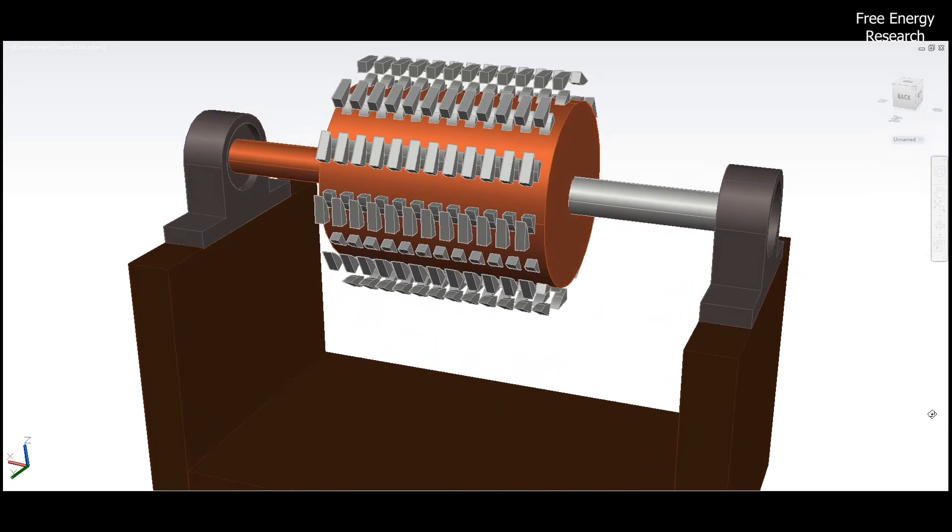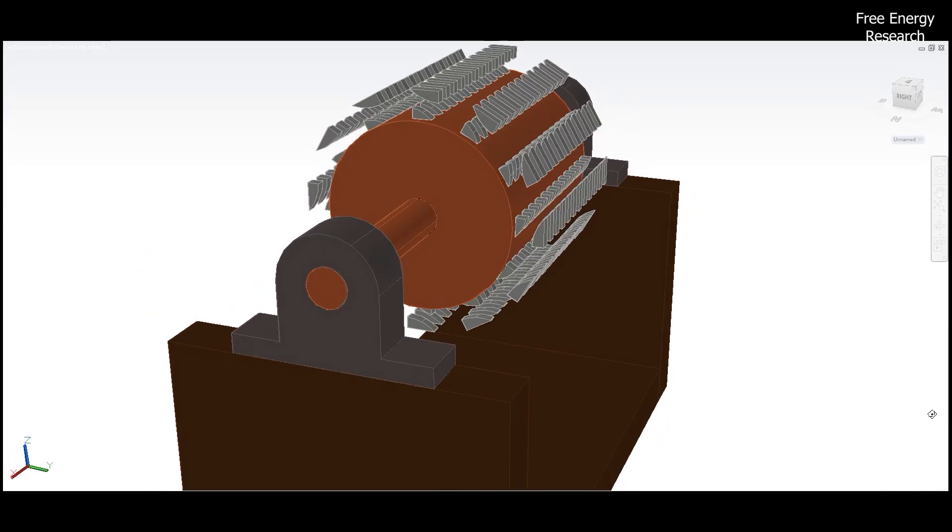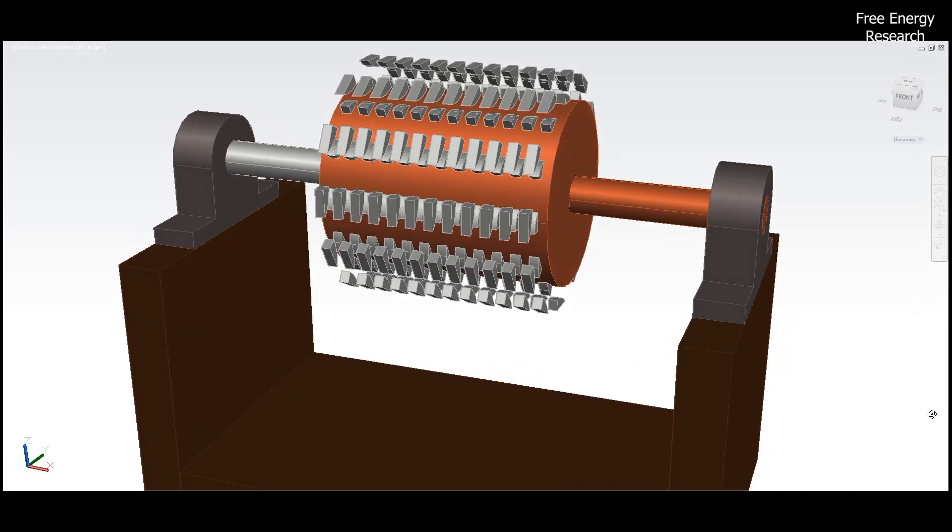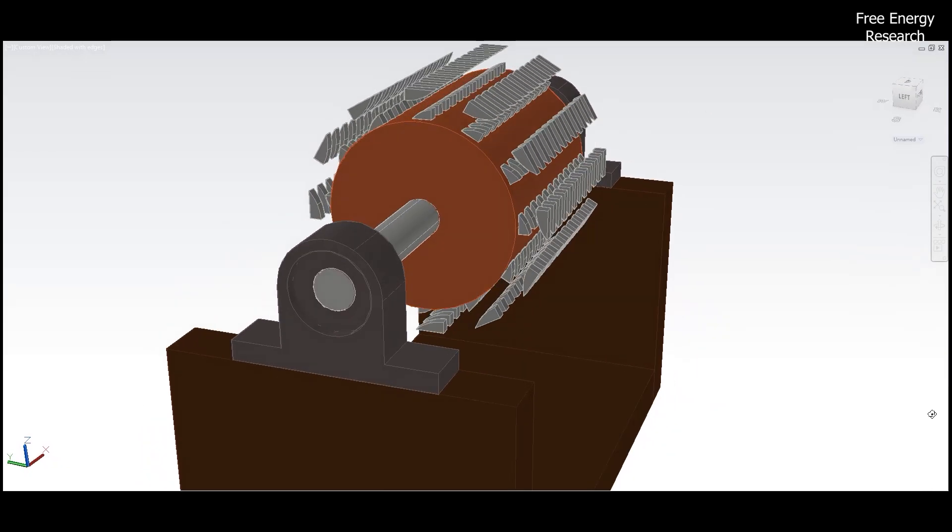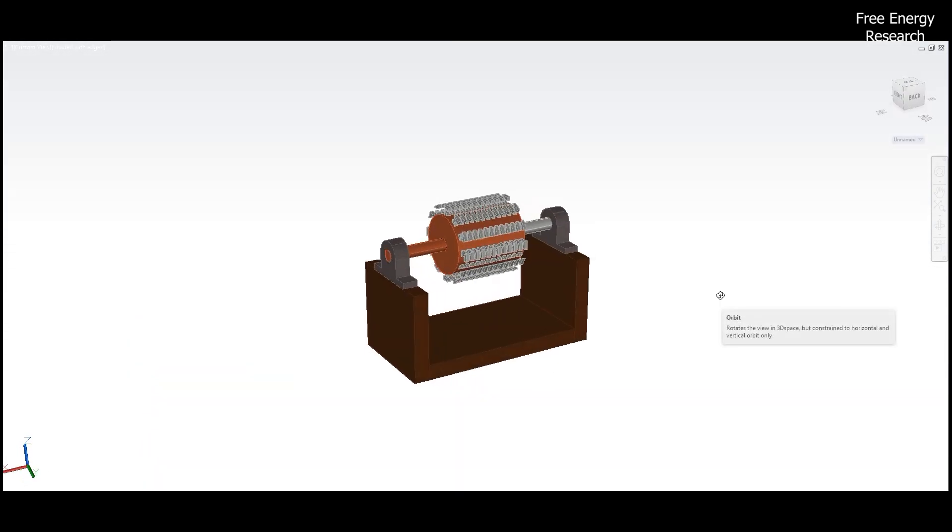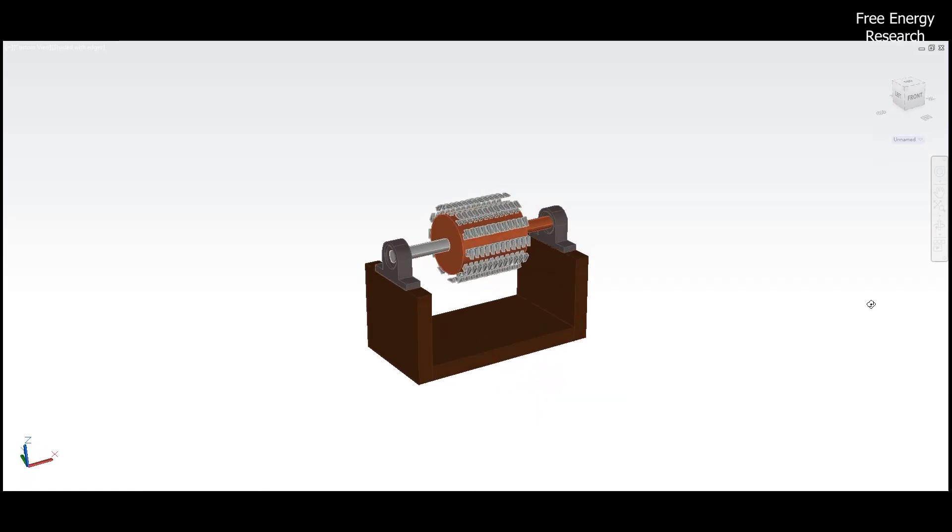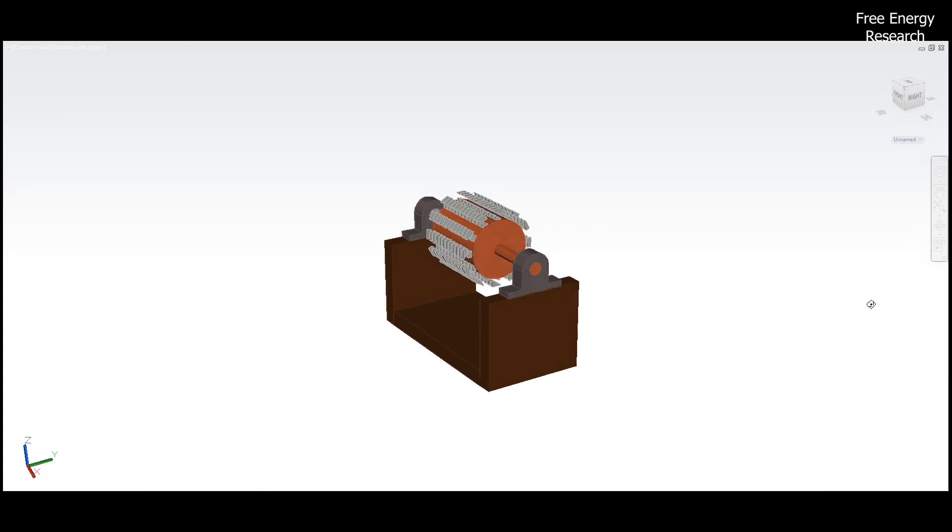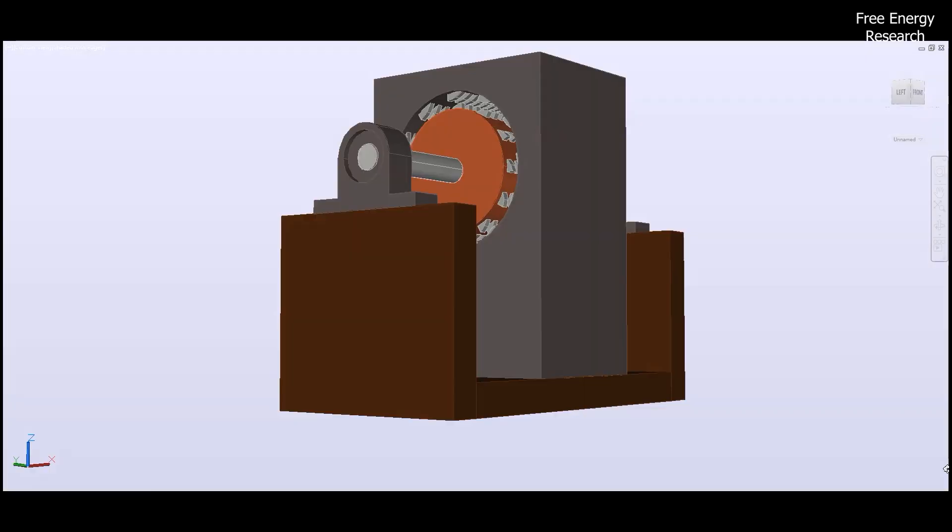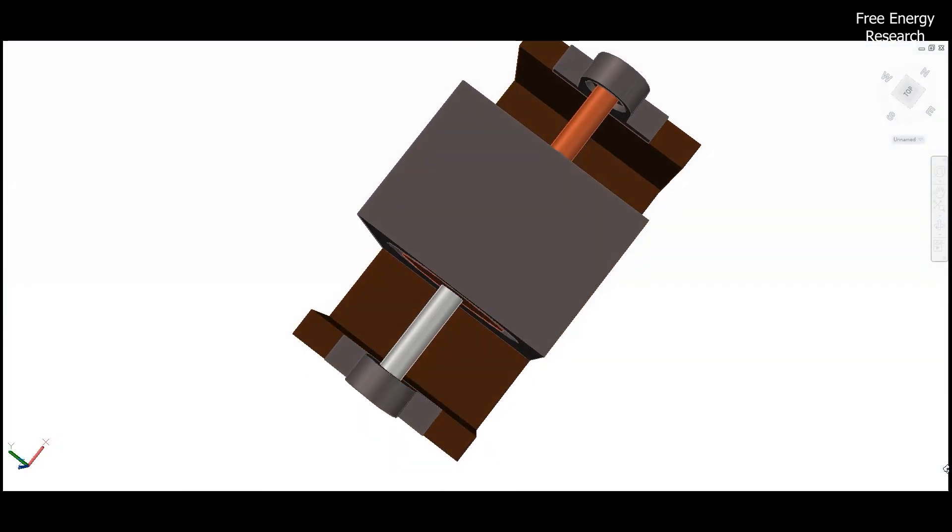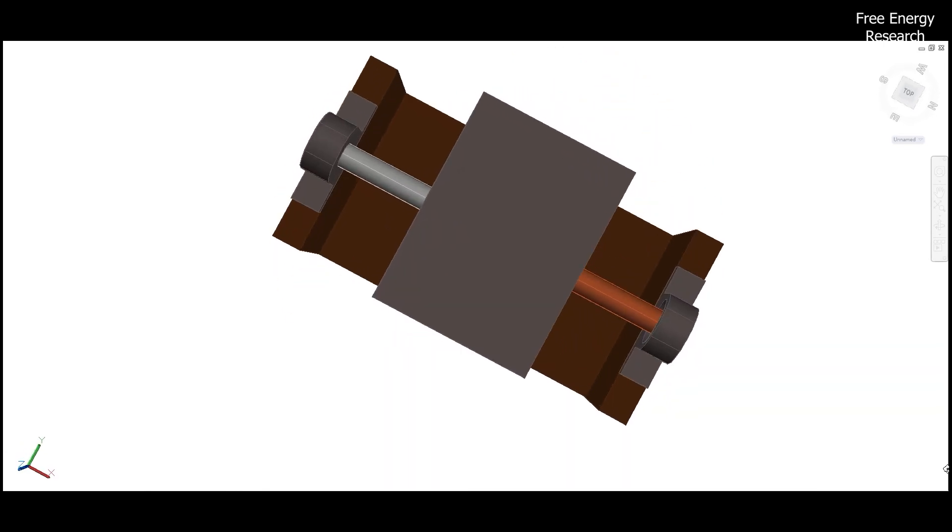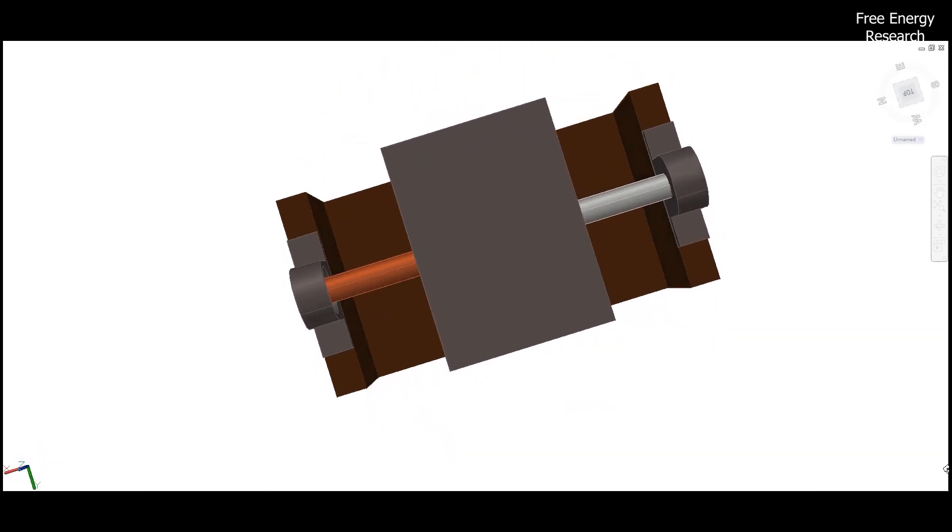Now, let's break down the key components. The support unit provides a stable foundation for the entire system, ensuring smooth and reliable operation. The fixture, with its strategically placed magnetic bodies, sets the stage for the magnetic interaction essential to power generation. The rotor, featuring carefully positioned magnetic bodies, plays a pivotal role in creating the repulsive forces that drive the system.